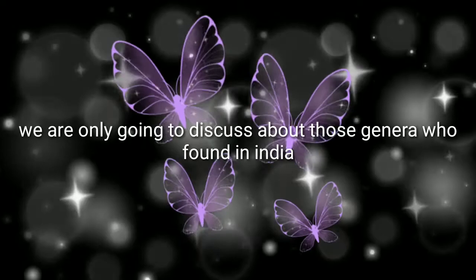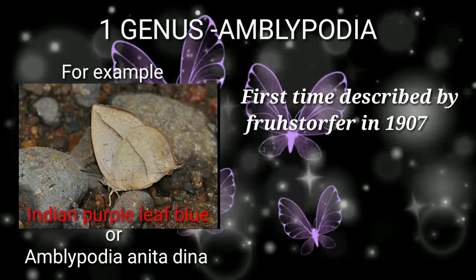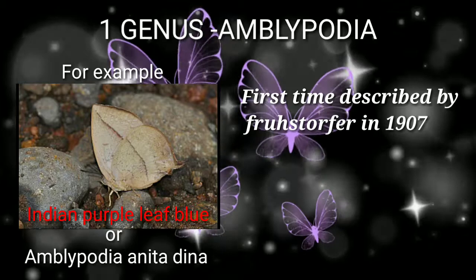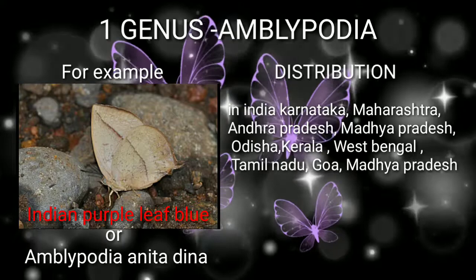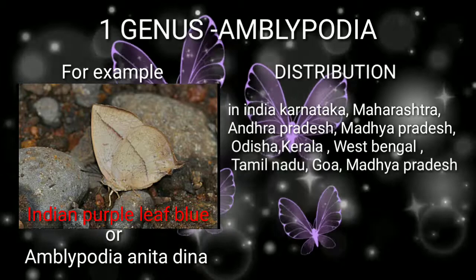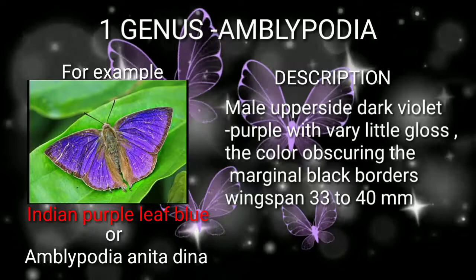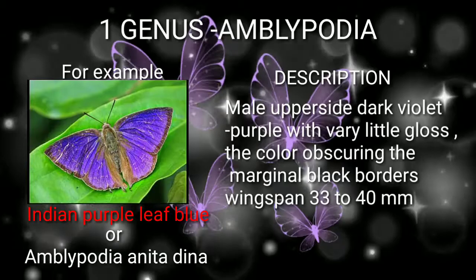We are only going to discuss those genera found in India. Genus Amblypodia — for example, the Indian Purple Leaf Blue butterfly — was first described by Christopher in 1907. Distribution in India includes states like Karnataka, Maharashtra, Andhra Pradesh, Madhya Pradesh, Odisha, Kerala, West Bengal, Tamil Nadu, and Goa. Description: upper side dark violet-purple with very little gloss, the color obscuring the margin of black borders, wingspan 33 to 40 mm.